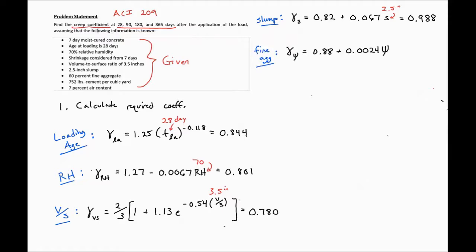Then our next factor accounts for our fine aggregate content. In our case, we have 60% fine aggregate.